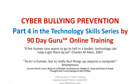"If the human race wants to go to hell in a basket, technology can help it get there by jet." That's Charles Allen in 1967. And then: "To err is human, but to really foul things up, that requires a computer" — anonymous.